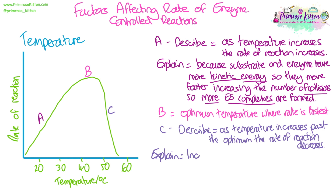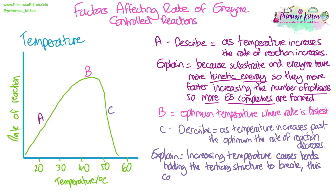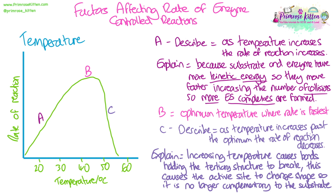How do we explain that decrease in part C? As the temperature increases, it's going to affect the bonds that hold the tertiary structure of the enzyme together, because there's almost too much kinetic energy and the bonds start to vibrate a lot. At high temperatures, the bonds actually break. This causes a change to the shape of the active site of the enzyme, so it is no longer complementary to the substrate, and no more enzyme-substrate complexes can form. The word complementary is really important here, as is the change to the active site. The word we use to describe this is that the enzyme has denatured — what we mean by denatured is that the active site has changed shape.